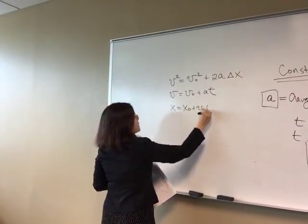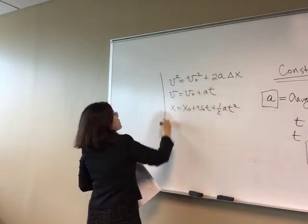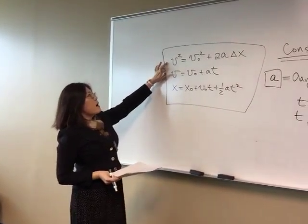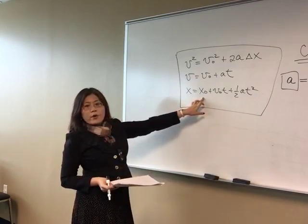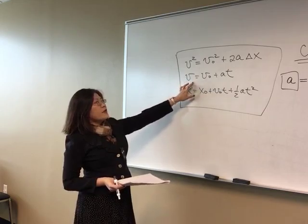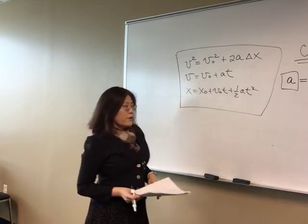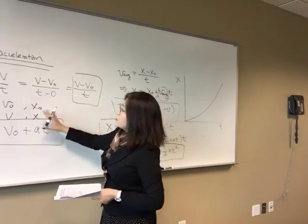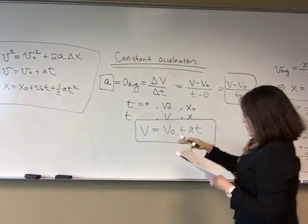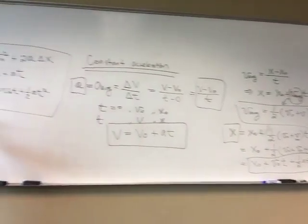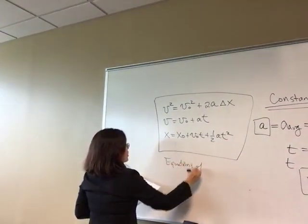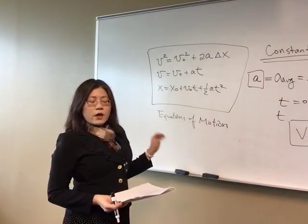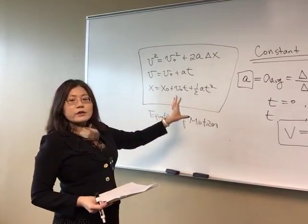Let's say when time equals zero there's an initial velocity V zero, and then at a later time T the velocity becomes V. So we have T on the horizontal axis and velocity on the vertical axis. When T equals zero you have velocity V zero; when T equals T you have velocity V. We can plug those into delta V over delta T: delta V is the final velocity minus initial velocity, and delta T is the final time minus initial time, giving us V minus V zero over T.